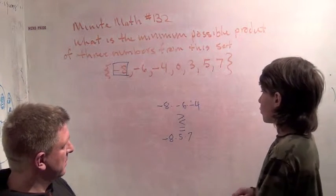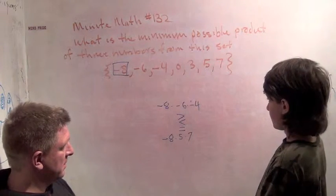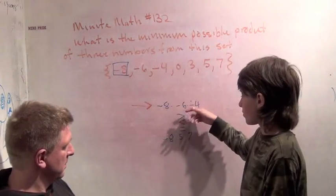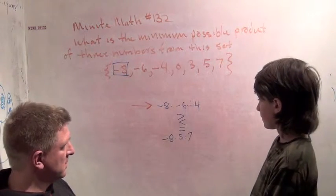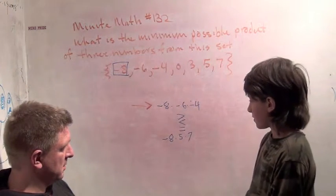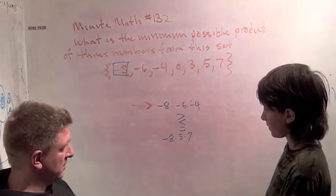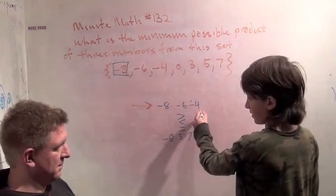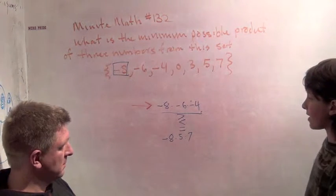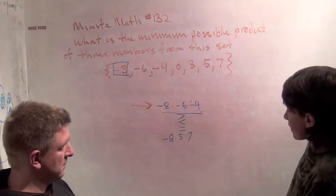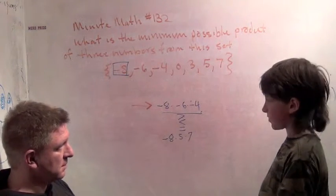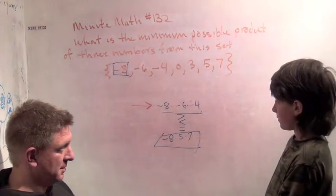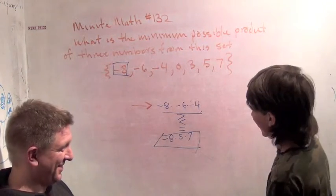Well, this one's negative 24 times 8 — that's negative 24 times 8. And this one's minus 8 times 35. So which one's smaller? It's minus 8 times 24, and this is — oh yeah, it's this one. So this one's the most negative? Yeah. Any positive? Yes.